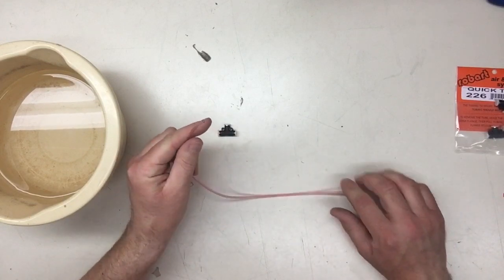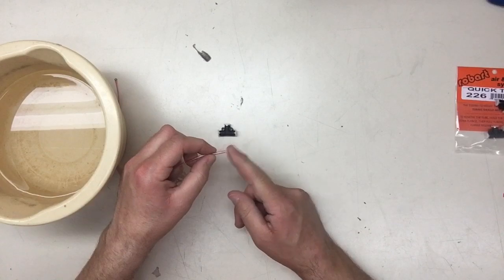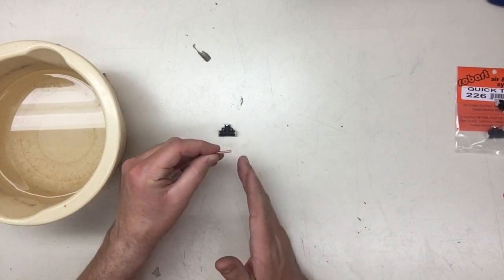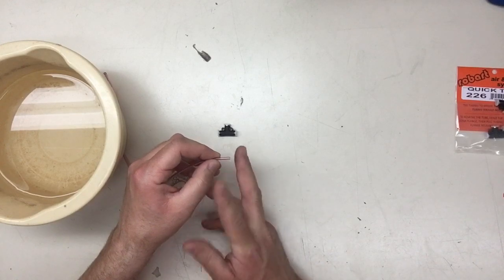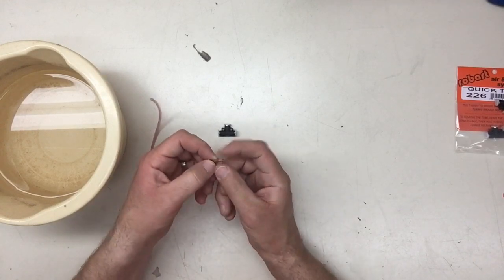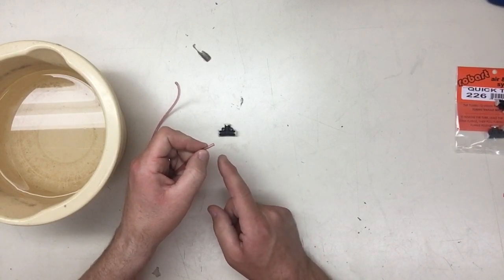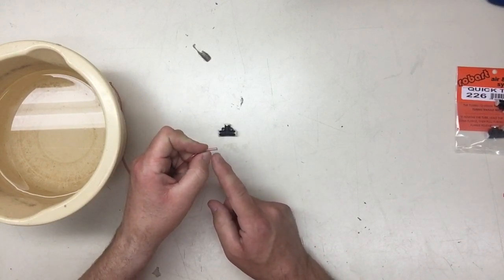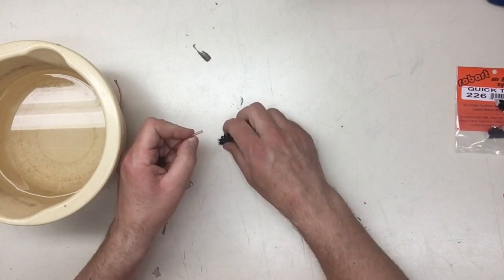So, I've got a little airline here. Here's a quick tip for you. When you are using the quick tees, make sure that you use a very sharp knife, and cut these. Do not use scissors, as it will crimp, and you could get an air leak that way. Sharp exacto knife, or hobby knife, and just slice that nice and sharp.